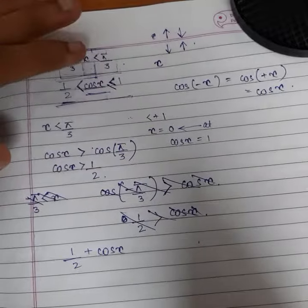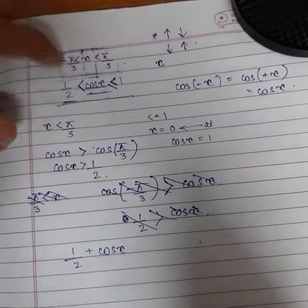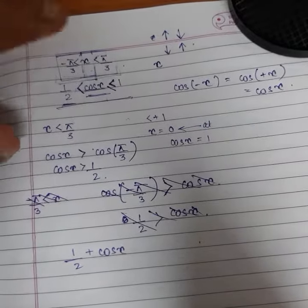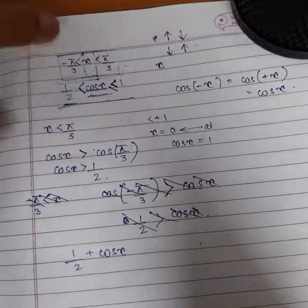Only the thing over here was that within this range you needed to find out the maximum and the minimum value of cos x, which turned out to be one and half.